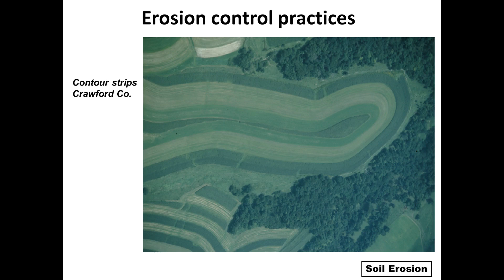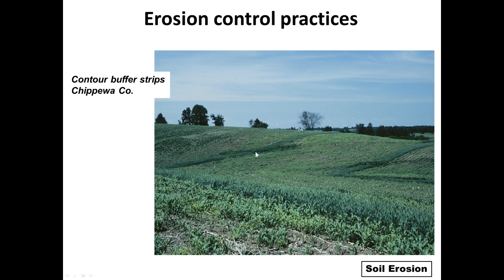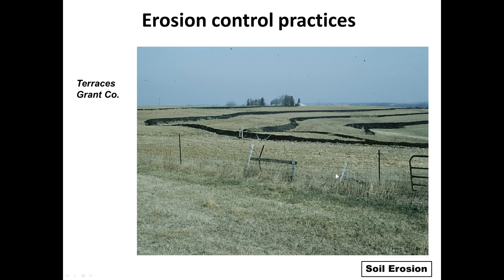Here are some examples of different erosion control practices for your review. Here are contour strips — they basically follow the lay of the land or landscape. These are buffer strips — every so often there are strips with a grass buffer area that helps break down that slope and reduce the slope length. If you have any runoff, it slows that water as it goes down the slope. Here are terraces — they break the slope and also change the slope of the field, creating a double effect.